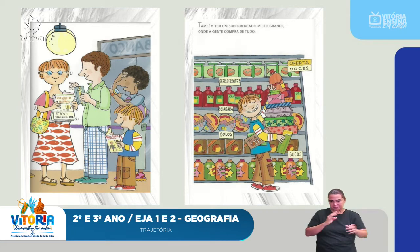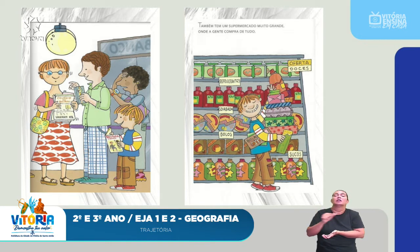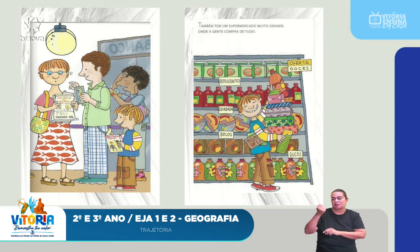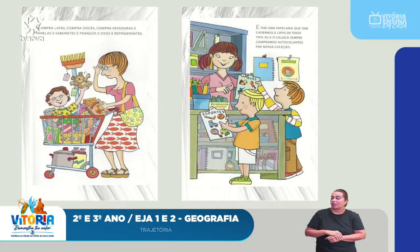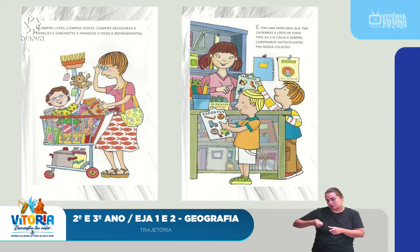There is also a very large supermarket where we can buy everything — soda, snacks, cakes, cookies, juices, candy on sale. You can buy cans, sweets, brooms, pots, soap, chicken, eggs, and refrigerants.